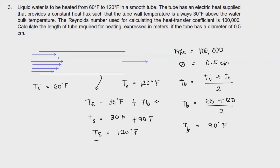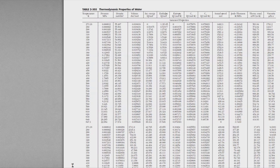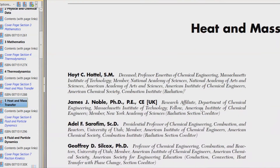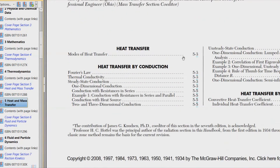We are already given the Reynolds number. The condition is a smooth pipe with internal cylindrical flow, and a Reynolds number of 100,000. Since the Reynolds number is greater than 4,000, the flow is turbulent. With this condition — smooth pipe, turbulent flow — we go to Perry's handbook, Chapter 5, Heat and Mass Transfer, to locate the most appropriate equation.